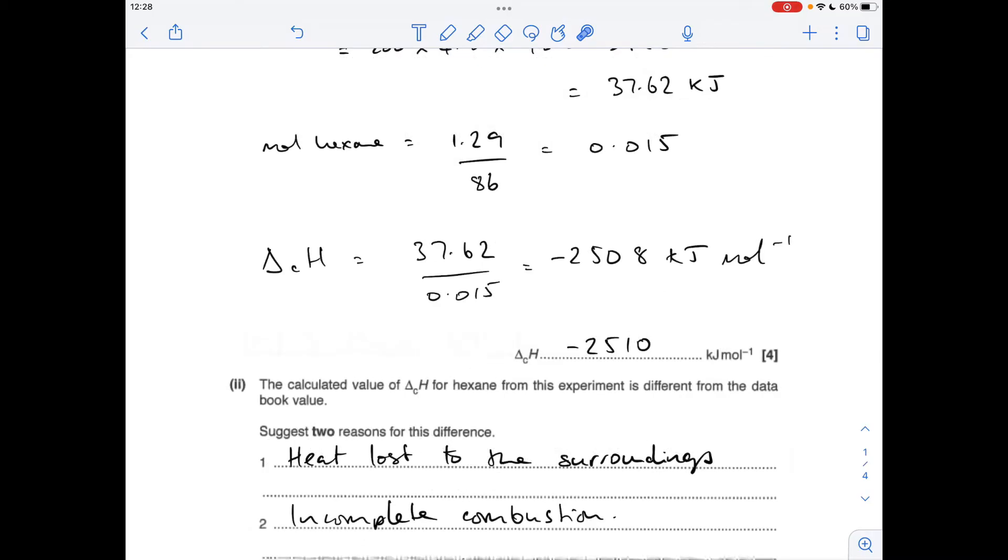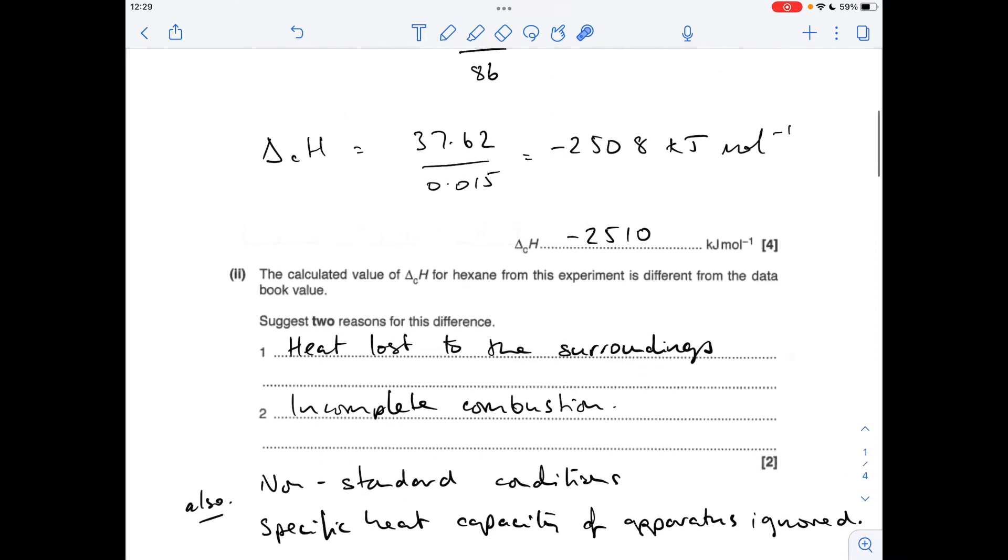Very typical follow up question from that. The data book value is different from the calculated value, suggest two reasons. The obvious one to go for is heat loss to the surroundings. Sometimes they won't allow that because they'll say other than heat loss to the surroundings suggest two other differences, but they haven't said that so heat loss to the surroundings is fine here. You could say incomplete combustion.